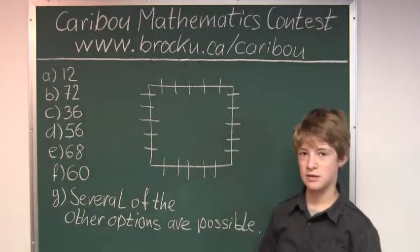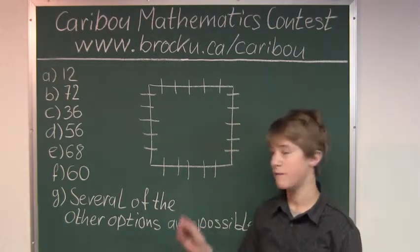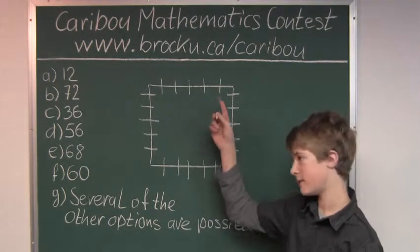So then we know that the square's perimeter has to be divisible by 24 because 6 times 4 is 24.